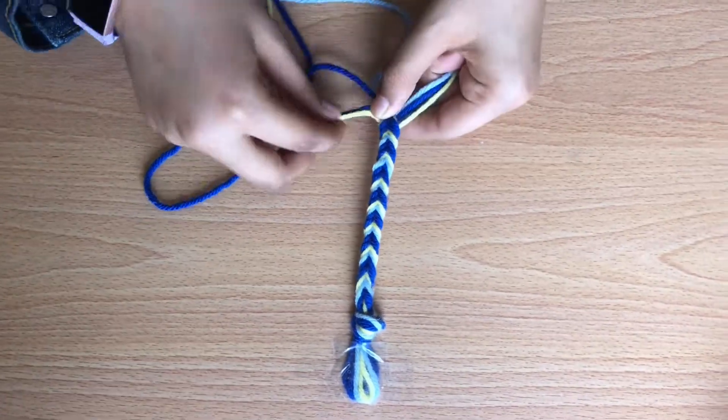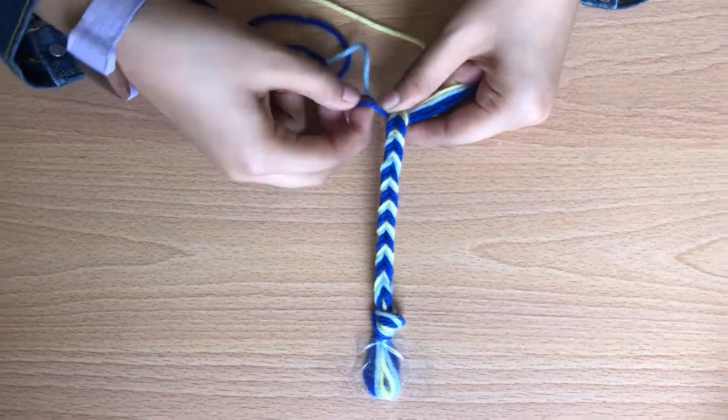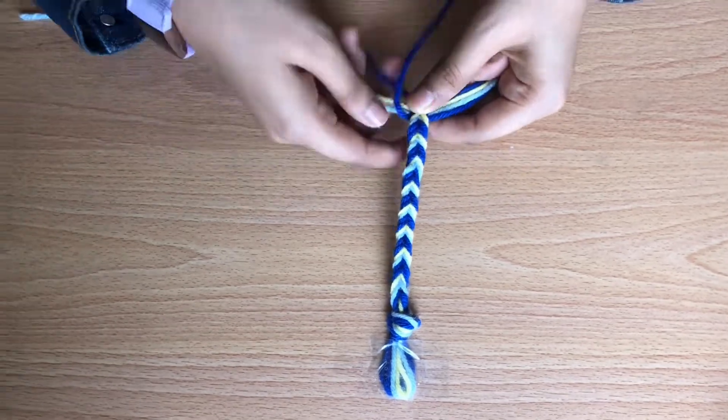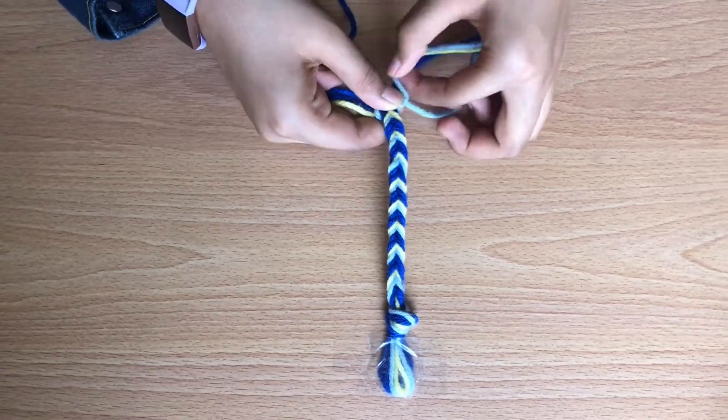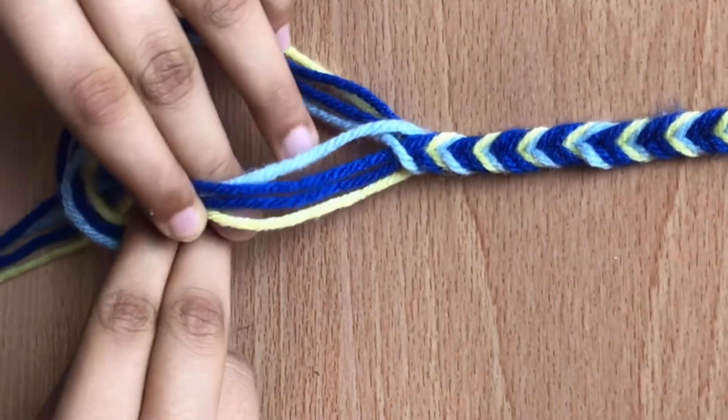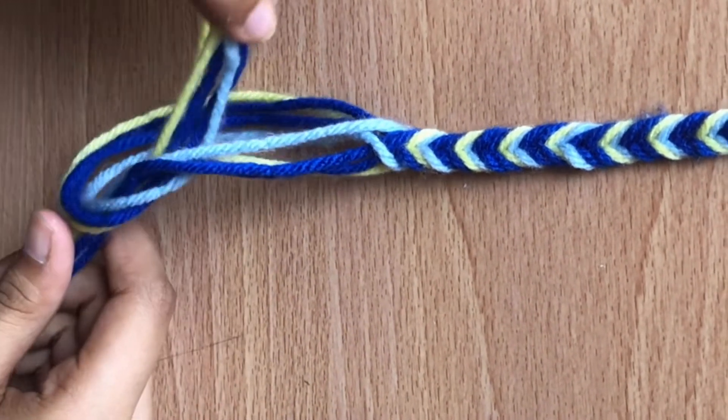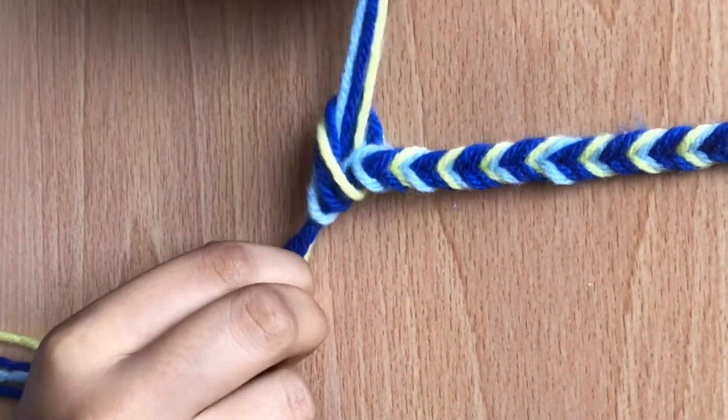After some time your bracelet should look something like this. Now we'll take the two sides and tie a knot.